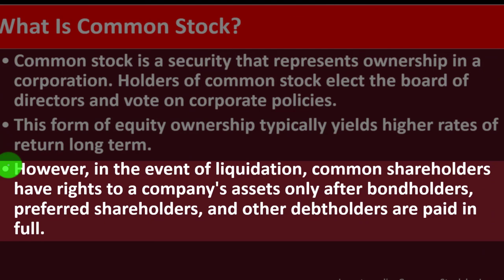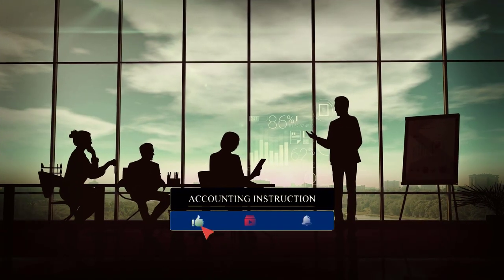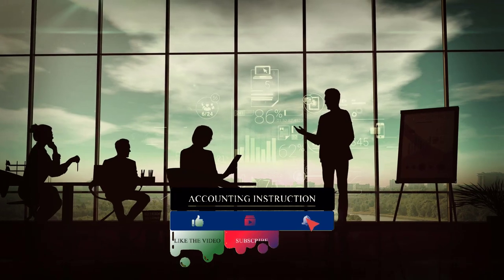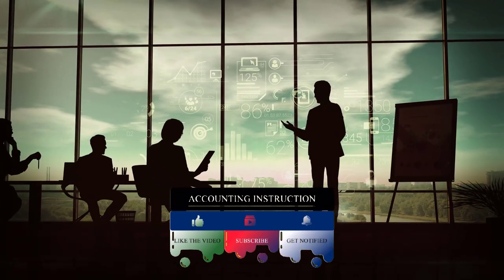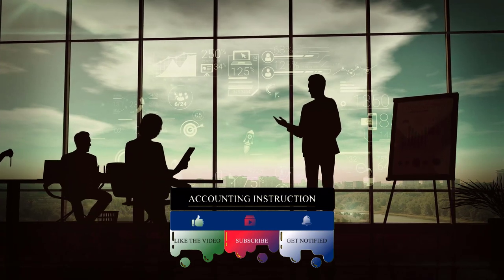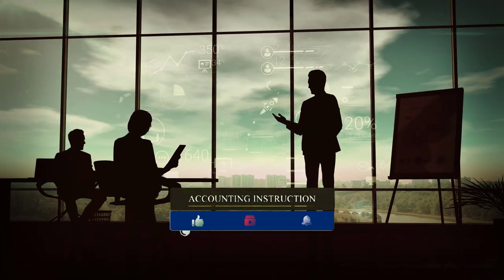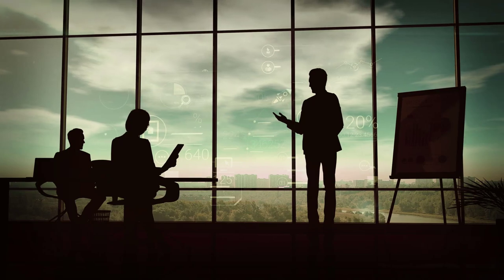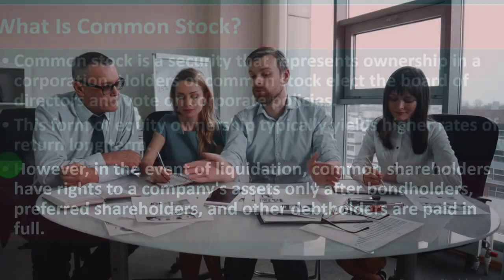However, in the event of liquidation, common shareholders have rights to a company's assets only after bondholders, preferred shareholders, and other debt holders are paid in full. If the corporation liquidates — goes bankrupt — the common stockholders are at the end of the line because they're the owners. The corporation has made commitments to others, such as bondholders, who are paid first.